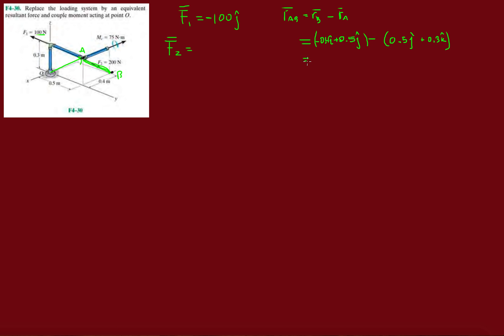So this vector will be negative 0.4 i, 0.5 minus 0.5, and then plus 0.3. So it's actually only in 2D, it's in the XZ plane.